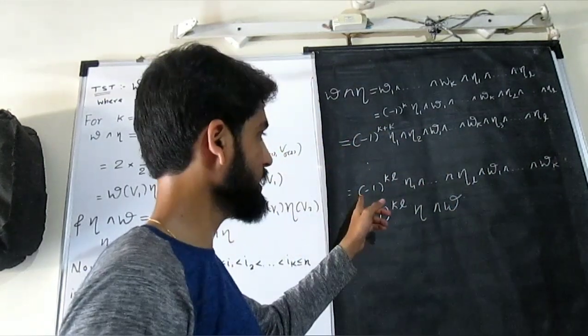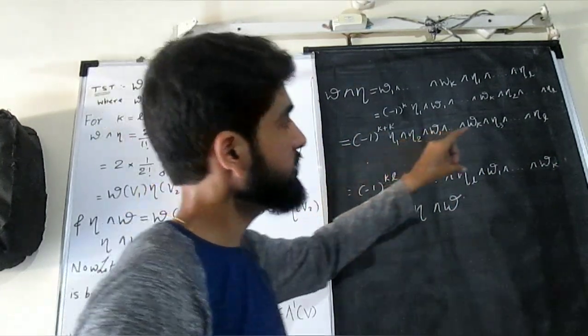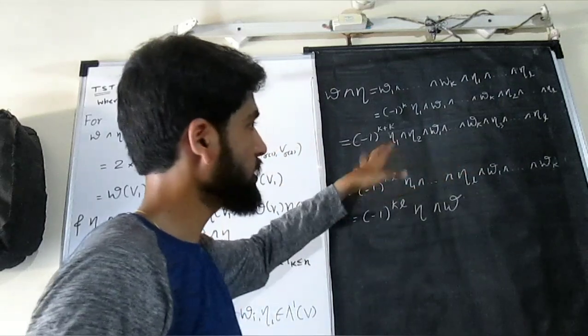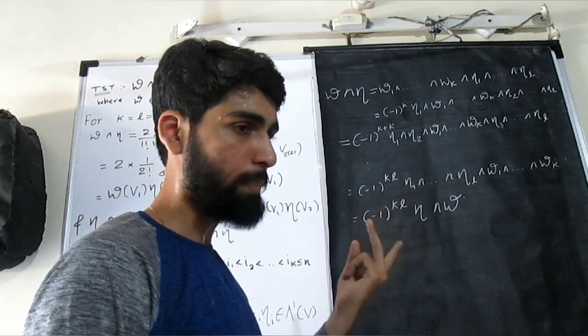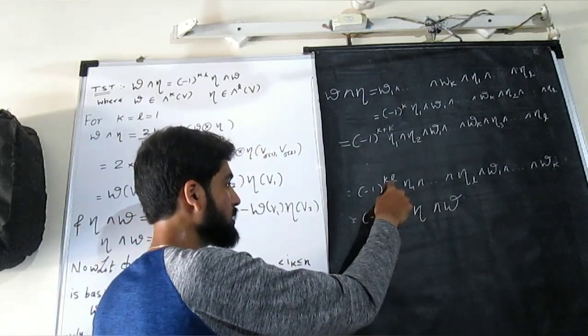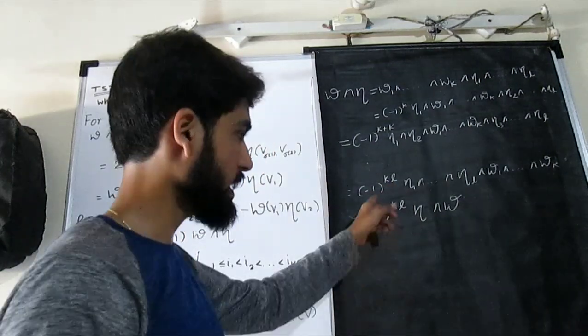So at the end, how many etas you are going to bring in the front? There are l such, and for each of them you have to make k swappings. So we get k into l as the power of minus 1, and hence you get this.